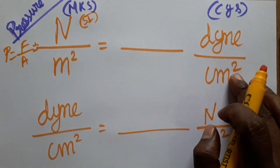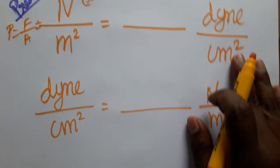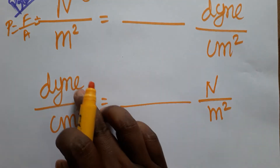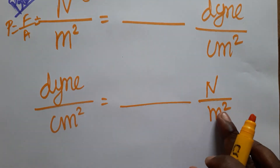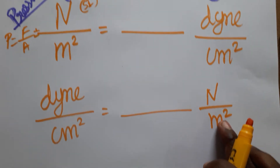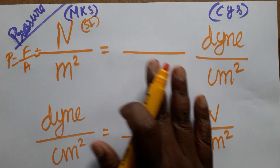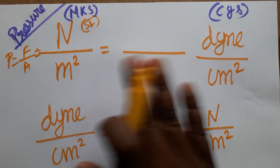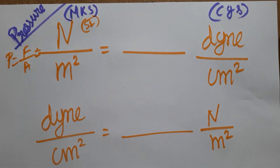The unit we are going to convert is dyn per centimeter square, and also the opposite: dyn per centimeter square is equal to dash Newton per meter square. So we are going to learn how to convert from one system to another system.